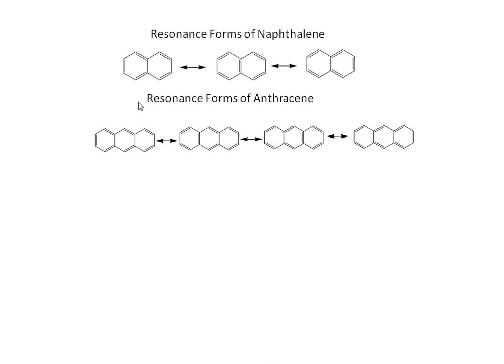We will discuss the resonance forms of anthracene. There are four resonance forms of anthracene available. In the first form, double bonds are shifted to one side and alternate double bonds are observed. Similarly, double bonds shift to alternate positions across the rings, giving four distinct resonance structures for anthracene.